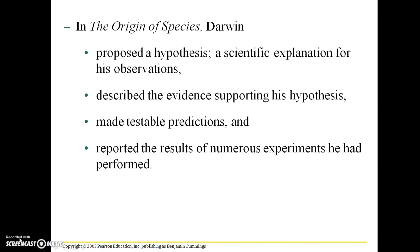We're going to jump right into the material here and elaborate on some concepts that I introduced within the first lecture. In The Origin of Species — the book published in 1859 written by Charles Darwin — Darwin proposed a hypothesis, which is a scientific explanation for his observations. He described the evidence supporting his hypothesis, made testable predictions, and reported the results of numerous experiments he had performed.